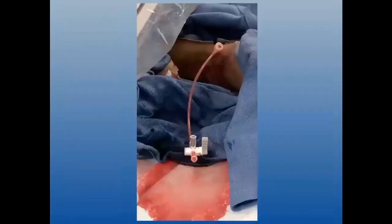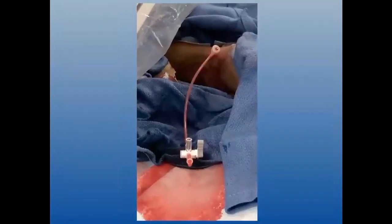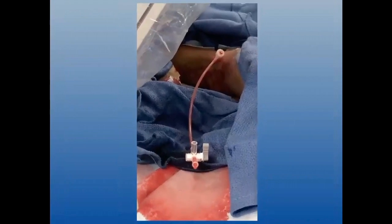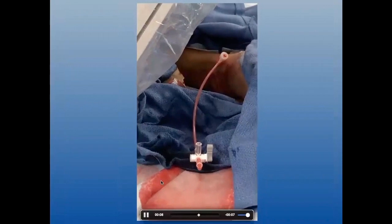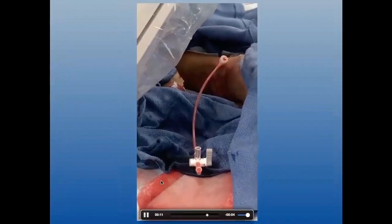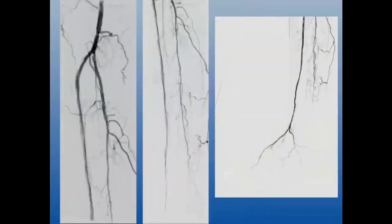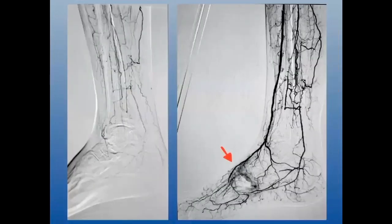Once I had through-and-through access, with the pedal sheath left open, I did orbital atherectomy to allow debris to flow out, then angioplasty and some additional interventions. Ultimately I achieved really good two-vessel runoff with reconstitution of the posterior tibial artery. On the final angiogram you can see the reconstituted posterior tibial, the AT/DP pedal plantar loop, and a nice angiographic wound blush.